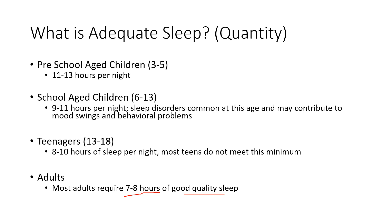School-age children — below 13 — need nine to eleven hours. Interestingly, sleep disorders are pretty common at this age, and we think this may contribute to some of the mood swings and behavioral problems we observe in kids during these periods. Potentially, ADHD can be linked to inadequate sleep in kids, or these conditions can fuel each other. We'll talk about how sleep disturbances can fuel certain conditions and vice versa.